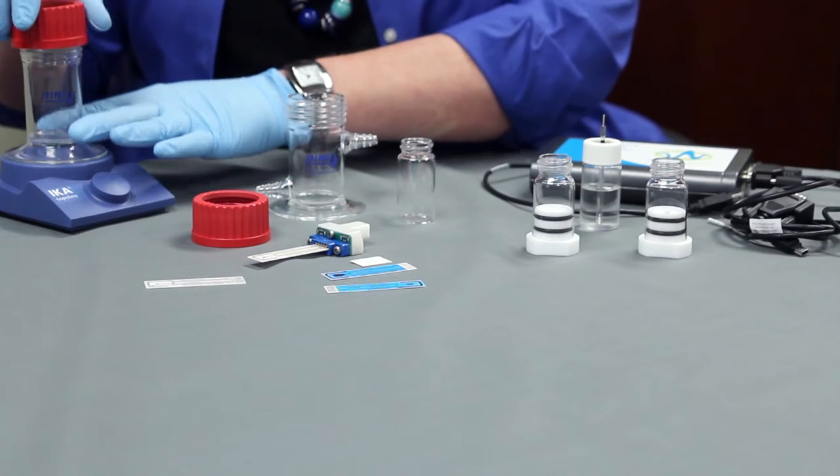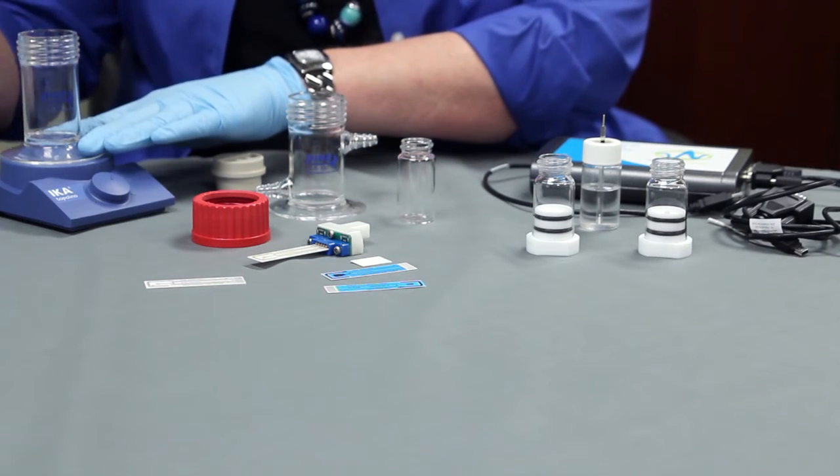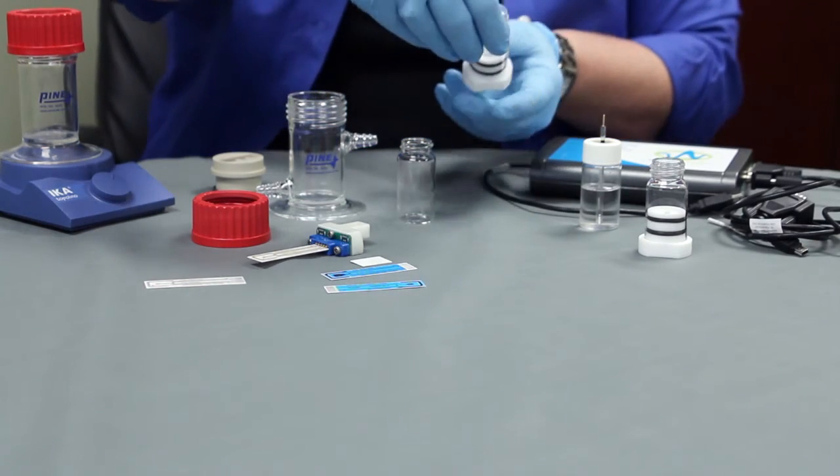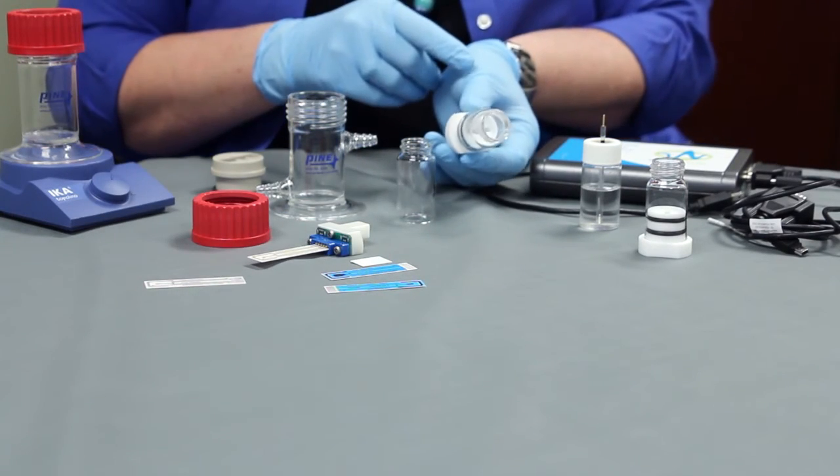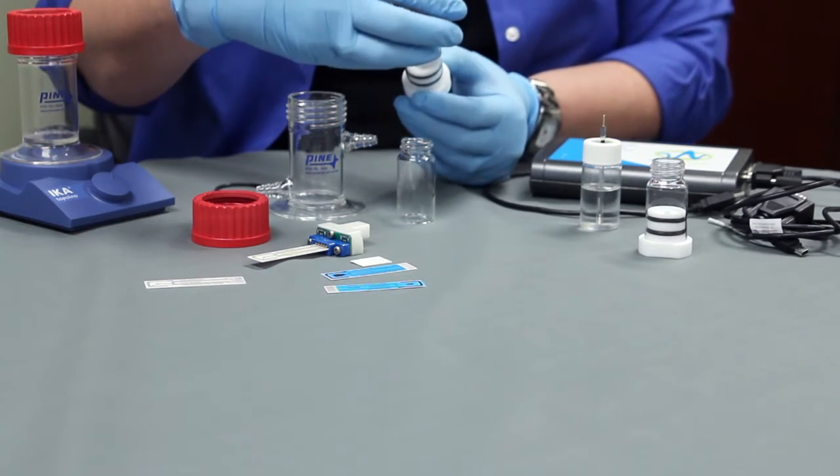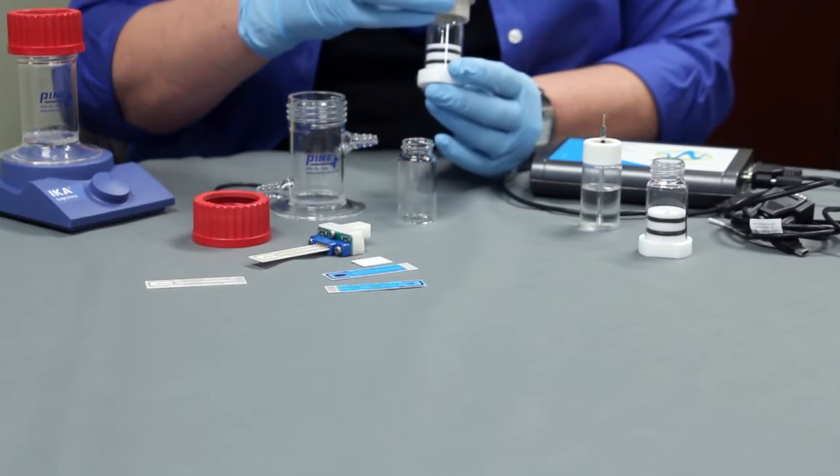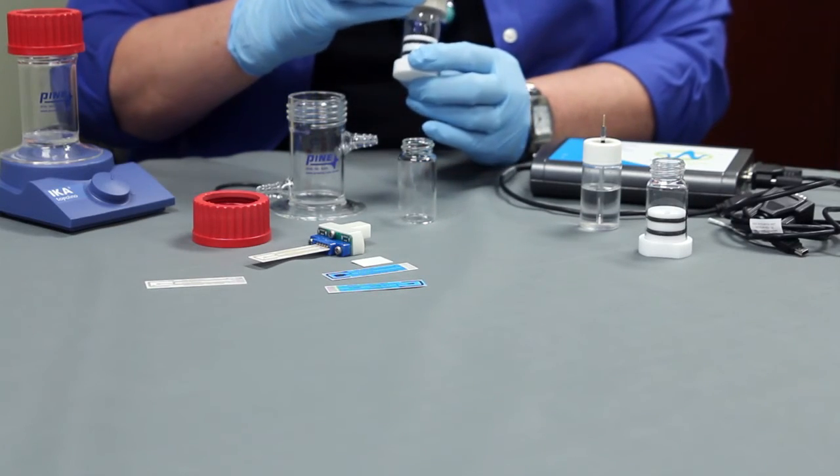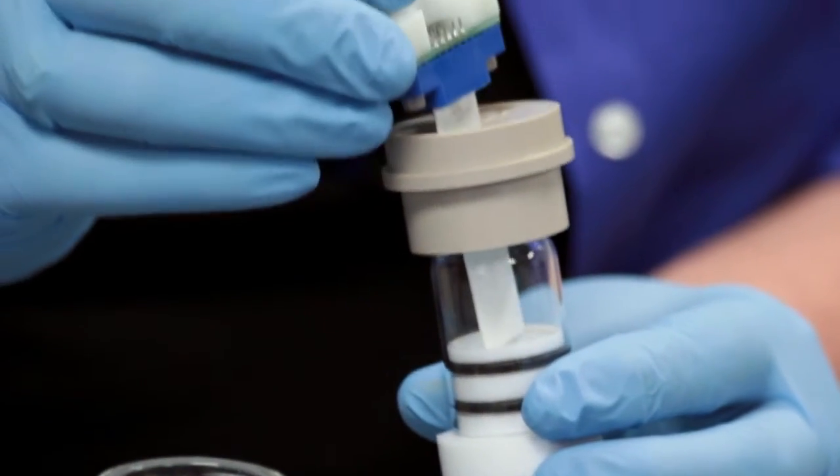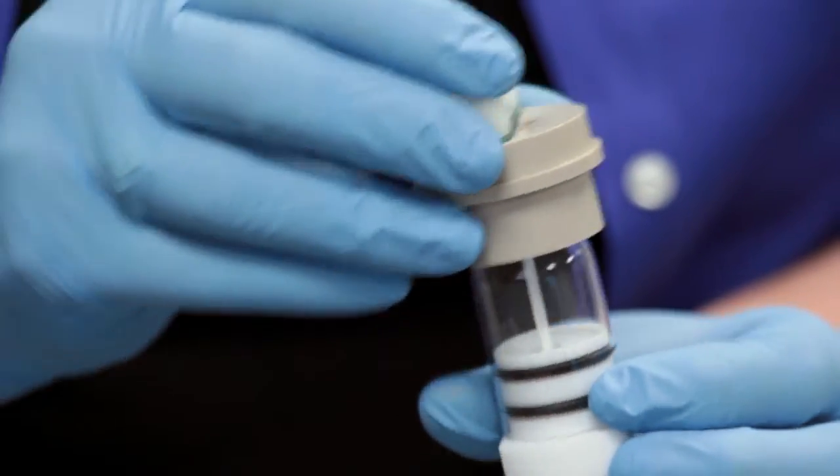We have two more options for a lower volume cell. These again use the same grip. You can see right inside there, you can see the lower volume. Again, you just attach the cap. You want to make sure you lined it up, so that you can drop the electrode in there. That holds about one to two milliliters of solution.